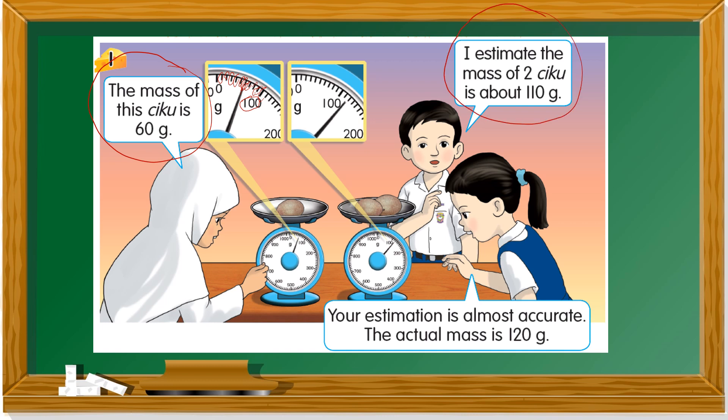Then the boy said, I estimate the mass of two chiku is about 110 gram. She said, your estimation is almost accurate. What's the meaning of accurate? Accurate bermaksud tepat. Almost accurate bermaksud hampir tepat.